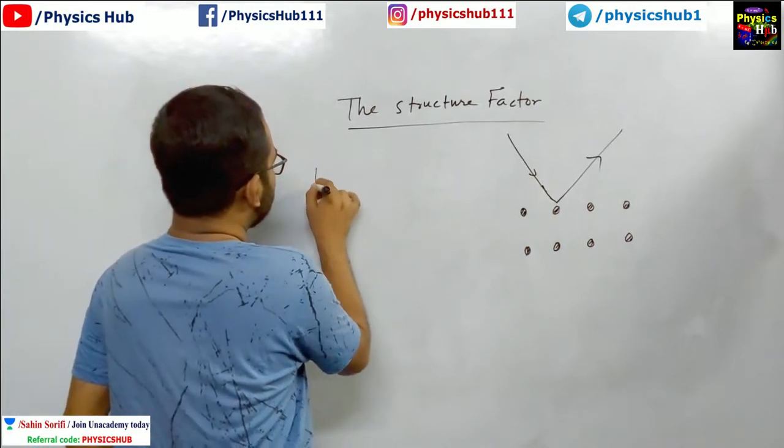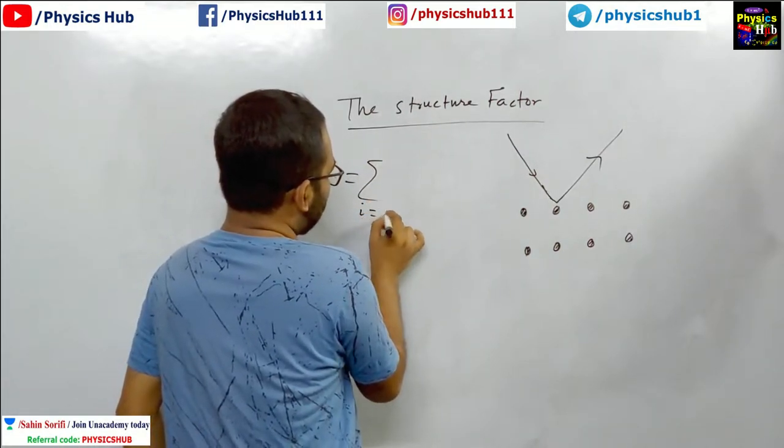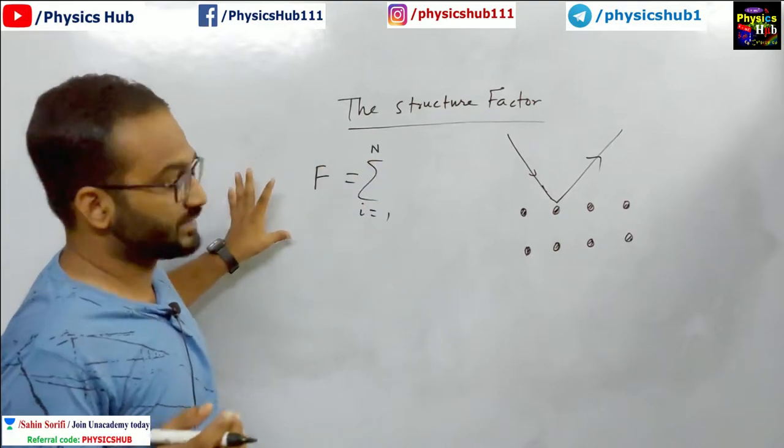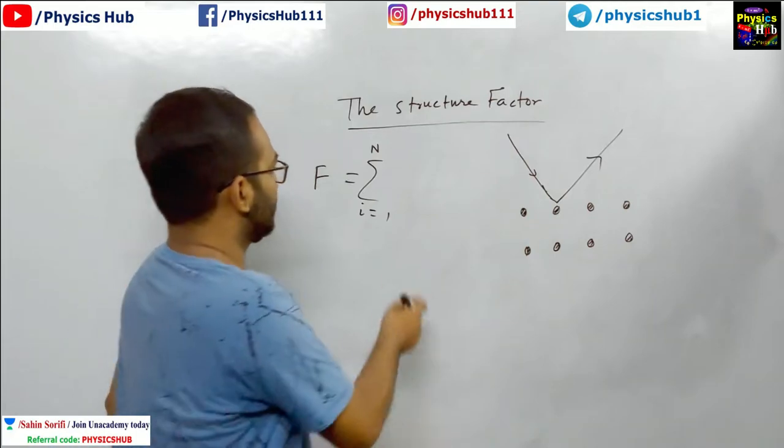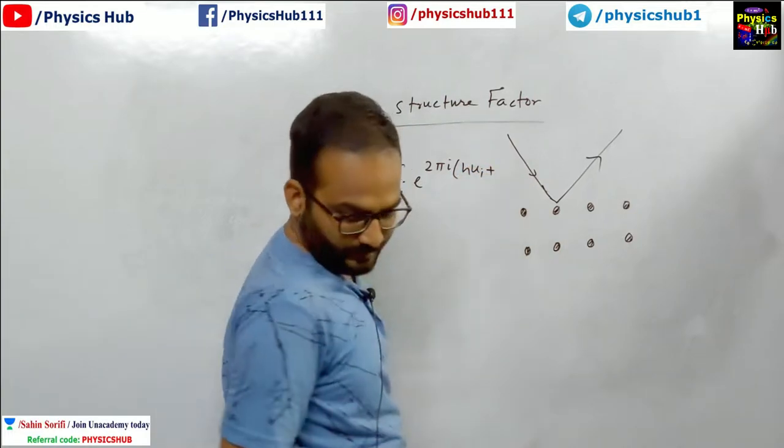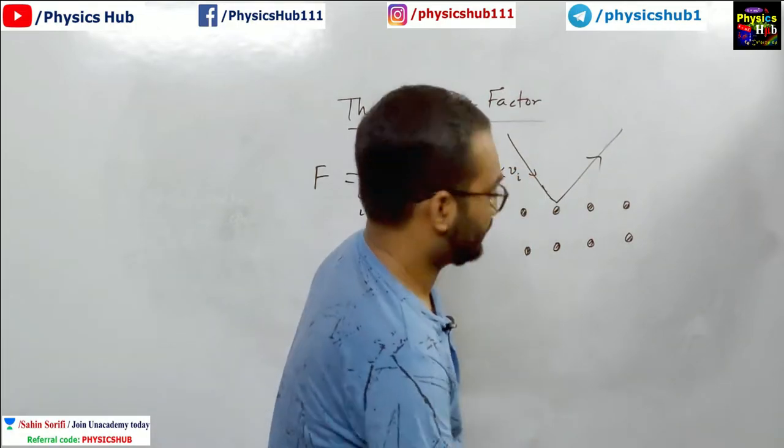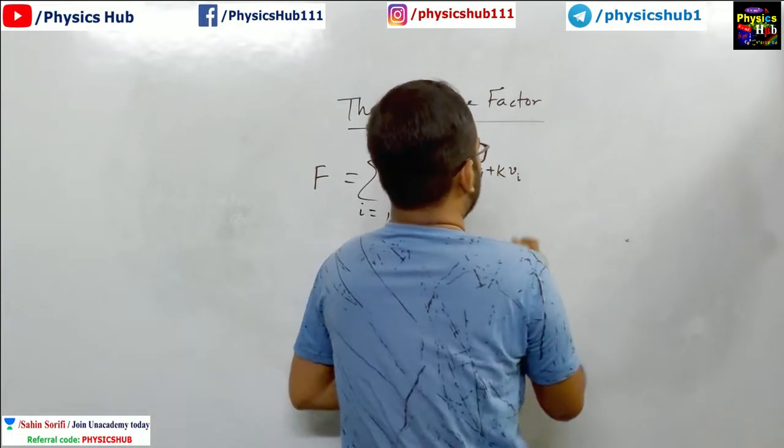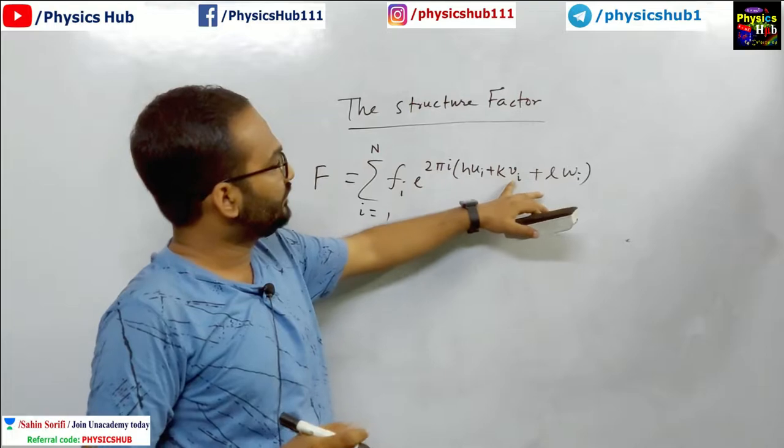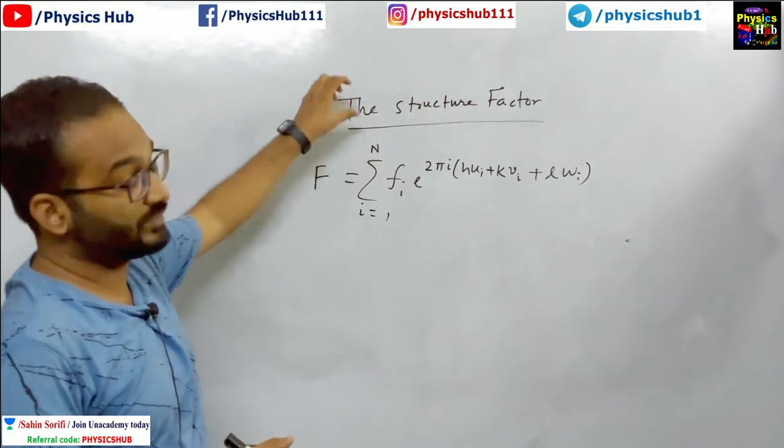So this structure factor is denoted mathematically by a factor f, which is equal to sum over i, i will be from 1 to n. This denotes the number of atoms per unit cell. So this summation is extending over the atoms inside a unit cell. The formula is f_i e to the power 2πi into h u_i plus k v_i plus l w_i.